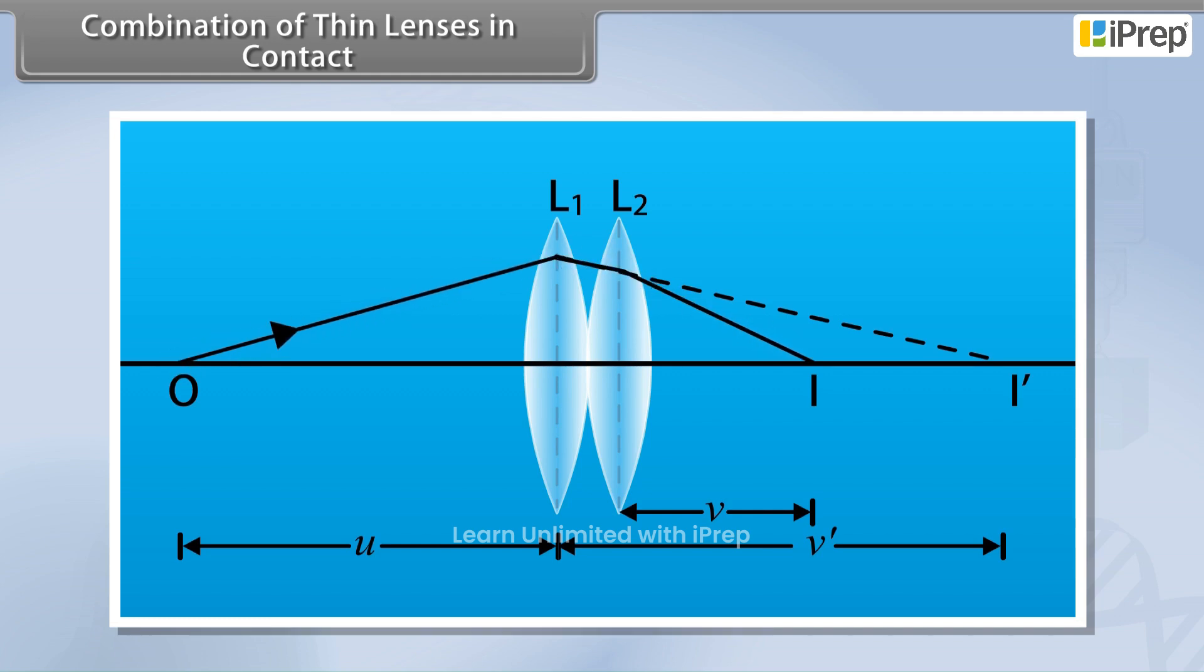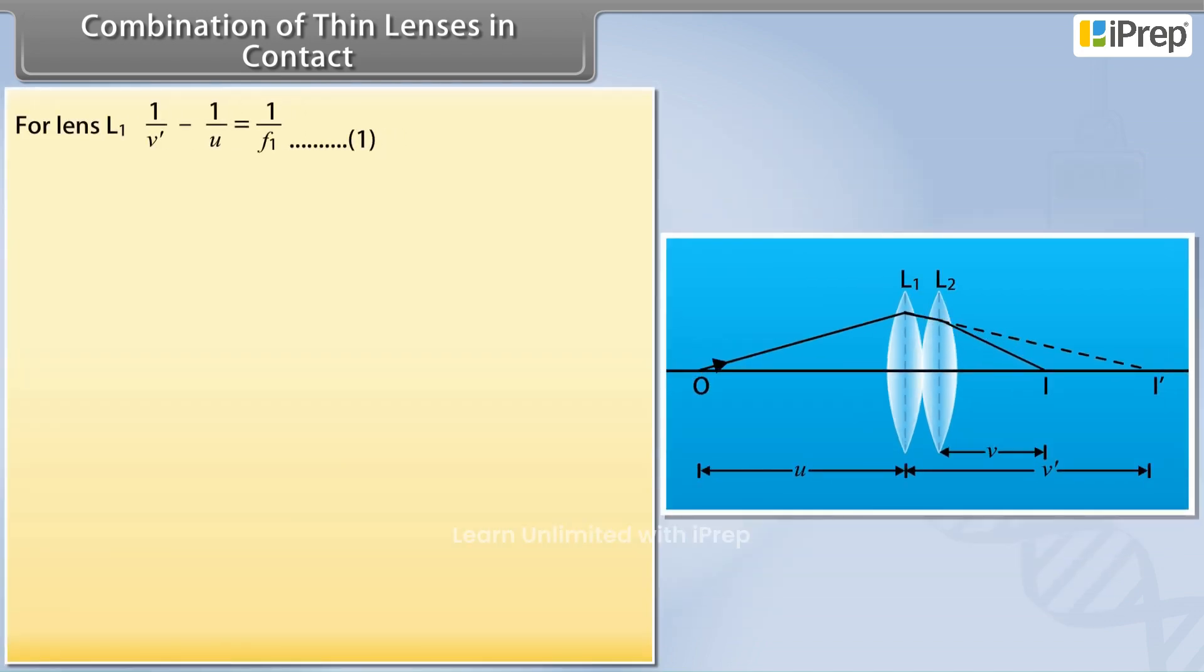If V dash is the distance of image I dash from the lens L1, then for lens L1: 1 by V dash minus 1 by U is equal to 1 by F1. Name it as equation 1.